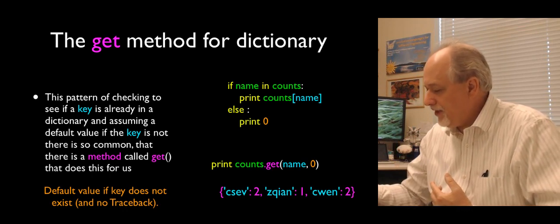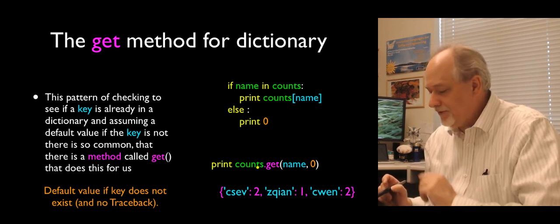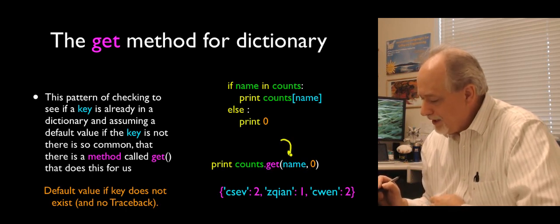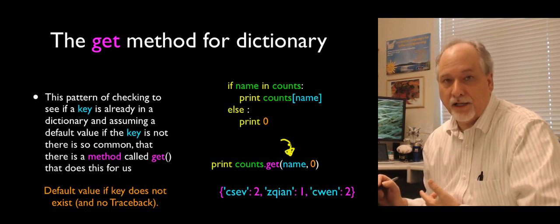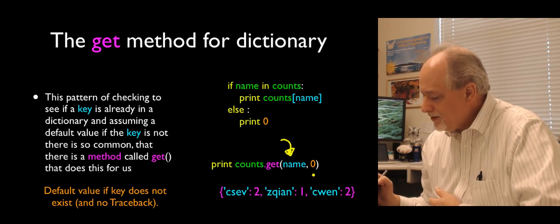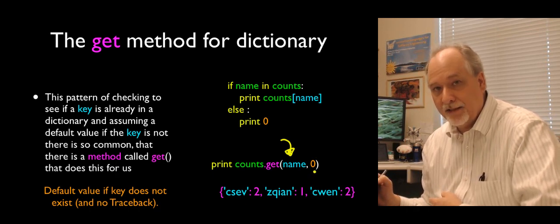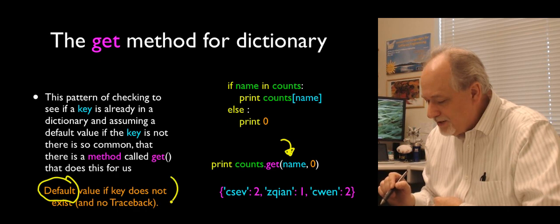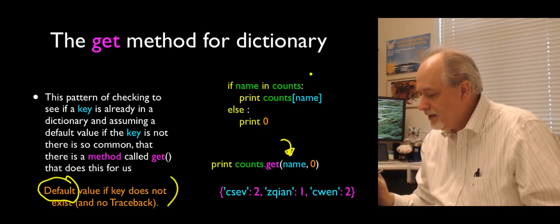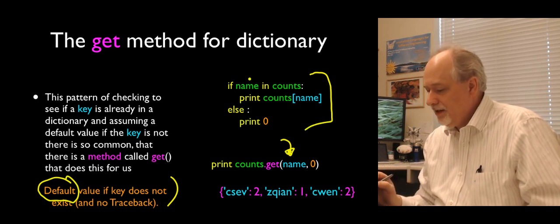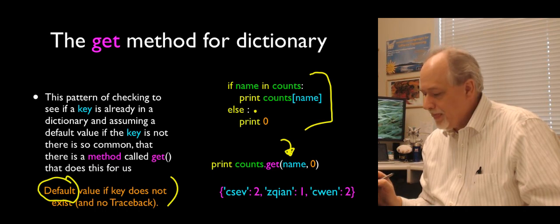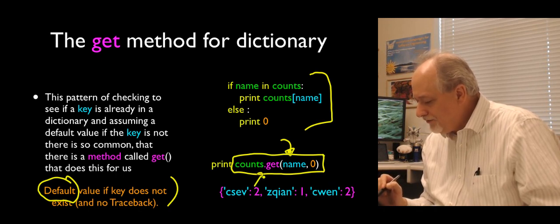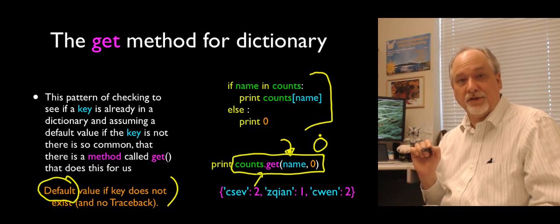There is a method called get. Counts is the name of a dictionary, and get is a built-in capability of dictionaries. It takes two parameters: the first is a key name like a string, and the second is a default value to give back if the key doesn't exist — there's no traceback. So this expression will either get the number if it exists, or give back zero if it doesn't.